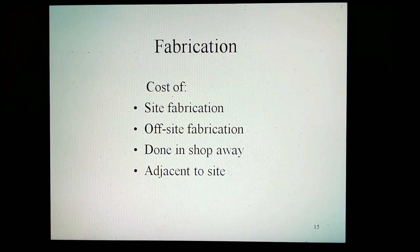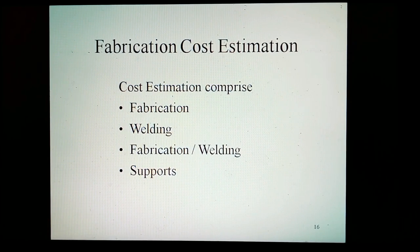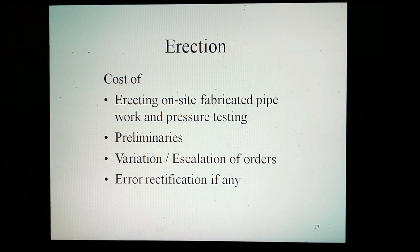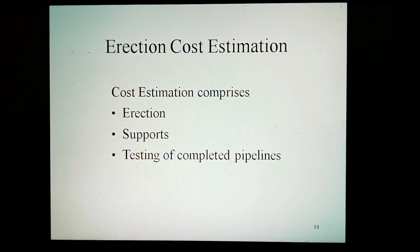Fabrication. The costs can be divided into site fabrication and off-site fabrication — done in a shop away from or adjacent to the site. Fabrication cost estimation comprises the following components: fabrication, beveling, and supports. Erection covers the cost of erecting on-site fabricated pipe work and pressure testing. This includes preliminaries, variation and escalation of orders, and error rectification if any. The contents of erection cost estimation comprise: erection, supports, and testing of the completed pipeline.